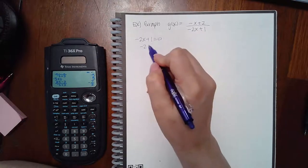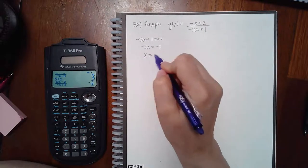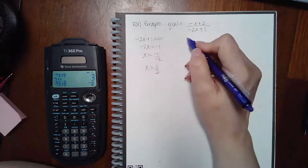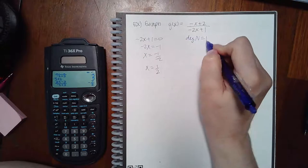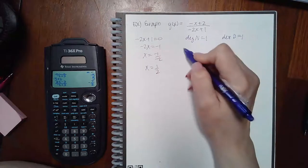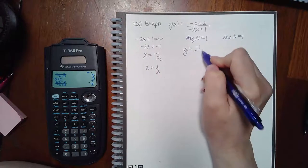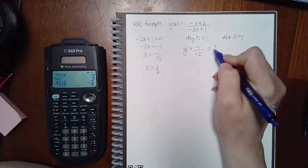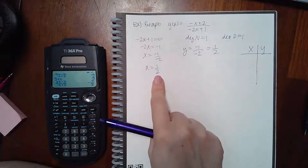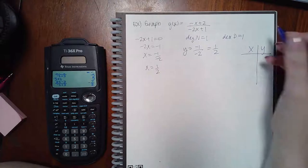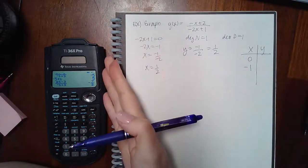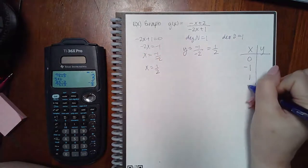Same process for the last one: set the denominator equal to zero to get the vertical asymptote, then compare your degrees. Since they are the same, the horizontal asymptote is the coefficient of the top over the coefficient of the bottom. The vertical asymptote is at x = 1/2, so pick x = 0 and x = −1 to the left, and x = 1 and x = 2 to the right.